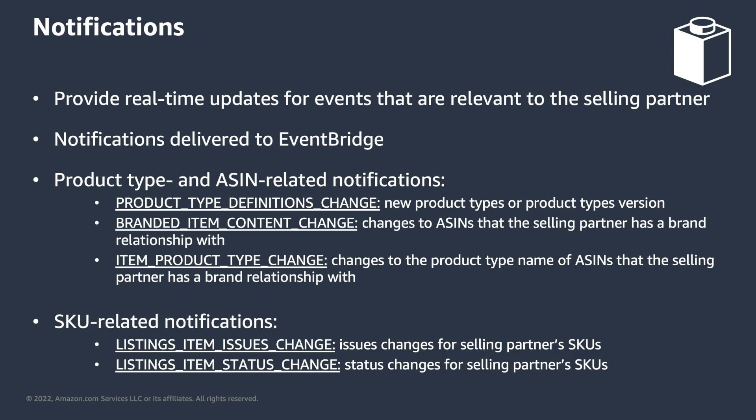With the introduction of the new suite of Listings APIs, five notification building blocks were also launched. These help improve the performance and efficiency of your systems by leveraging messages that are proactively sent by Amazon in real-time, instead of having to call for data periodically. These notifications provide information about changes to Product Types, ASINs, and SKUs that are relevant to a selling partner's business. Product Type and ASIN notifications will help you take preventive actions, like updating a product schema to its latest version in order to populate new attributes. SKU or Listings notifications will help you identify issues and status changes as soon as they happen, so the selling partner can take the corresponding corrective actions.